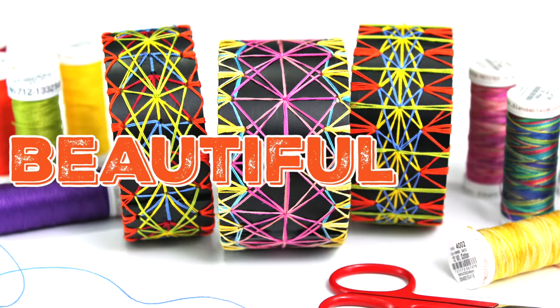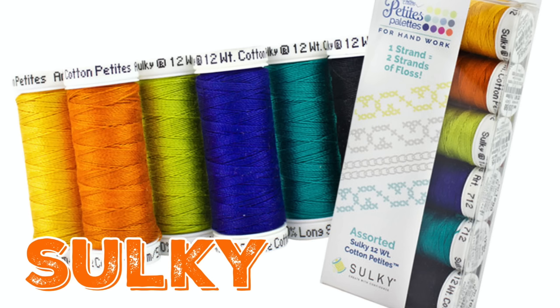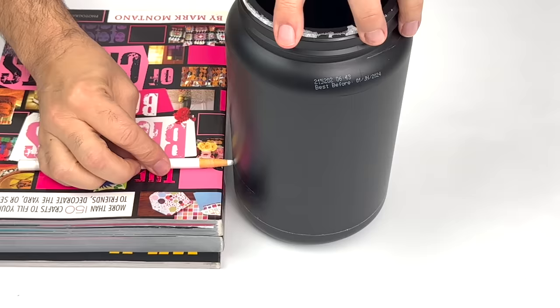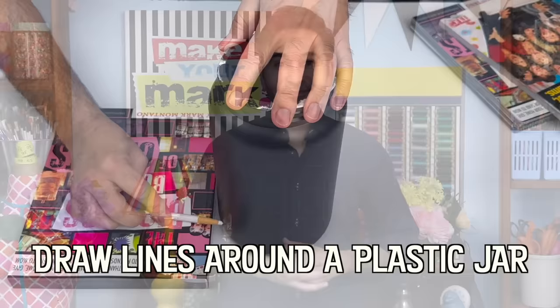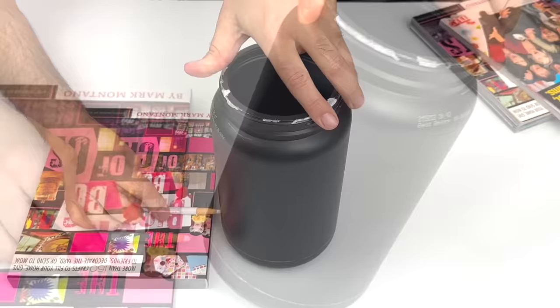Hey everybody, I'm Mark and today on Make Your Mark we are making some beautiful geometric cuffs using Sulky 12 weight cotton petites thread and an old jug to make the cuff base. You know how much I love upcycling. Are you ready? Let's get making.